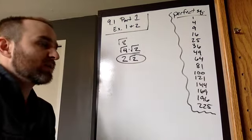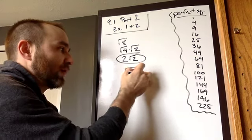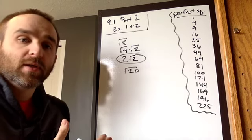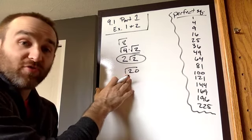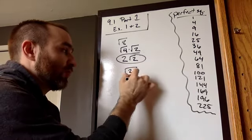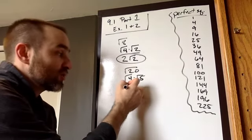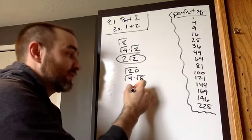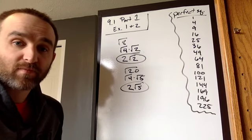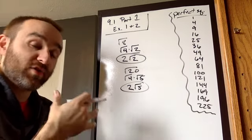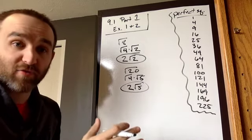Let's look at the square root of 20. Very similar — we need that perfect square factor. We know this is four times five. So I'm going to break that into the square root of four times the square root of five. I can take the square root of four, which is two. I cannot take the square root of five, so that's going to stay as the square root of five. And that's my answer: two root five. Take the square root of what you can; whatever you can't takes the square root of stays underneath that radical. This is simplest radical form.